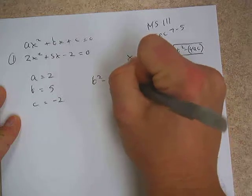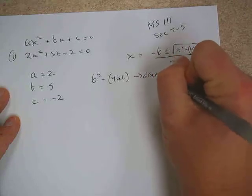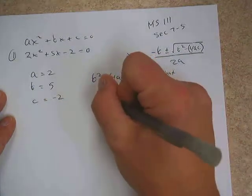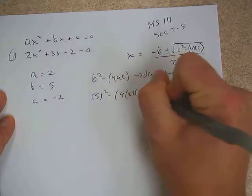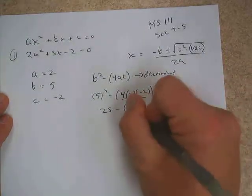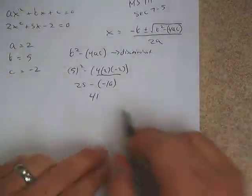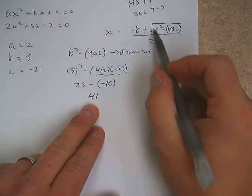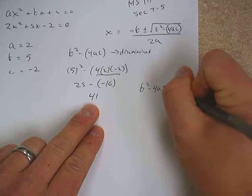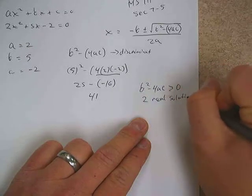Step two: calculate the b squared minus 4ac part first. This is called the discriminant. In our case, b is 5, so we go 5 squared minus 4 times 2 times negative 2, giving us 25 minus negative 16, which is 41. If the discriminant is greater than 0 — like 41 in this case — we're going to have two real solutions, as we'll see in a few minutes.